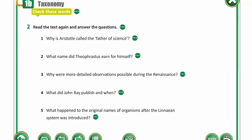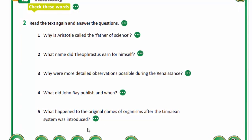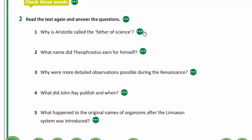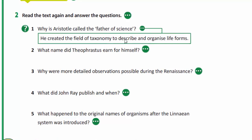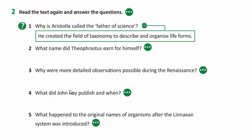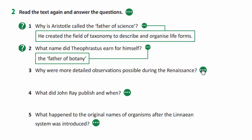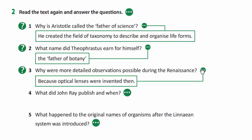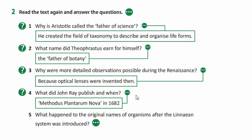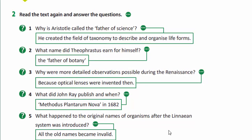Exercise 2: Read the text again and answer the questions. Why is Aristotle called the father of science? He created the field of taxonomy to describe and organize life forms. What name did Theophrastus earn for himself? The father of botany. Why were more detailed observations possible during the Renaissance? Because optical lenses were invented then. What did John Ray publish and when? Methodus Plantarum Nova in 1682. What happened to the original names of organisms after the Linnaean system was introduced? All the old names became invalid.